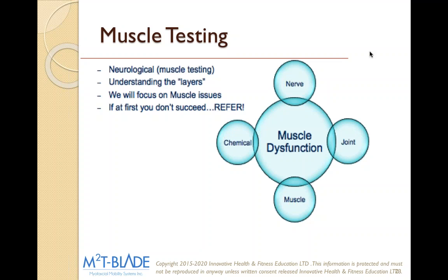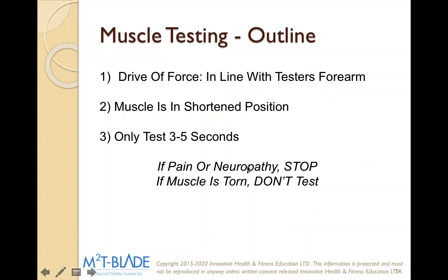We go from a global approach — our functional dynamic approach — to a specific approach, which is our muscle testing. For example, if we take someone through a squat and see their hips and ankles are restricted, we go to the hip and further investigate what muscles are restricted. We do that through muscle testing and range of motion. In our live course or master's course online, we teach this methodology — putting the muscle in a shortened position and driving force in line with the tested form for three to five seconds.